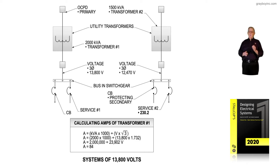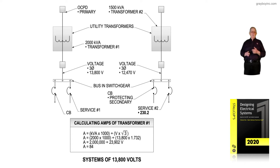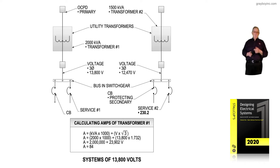When the math is done here you have 84 amps, so that's very small conductor sizing that we would route from maybe a substation up to the building identified as service number one. We could have two to six disconnects, as we see in the illustration.